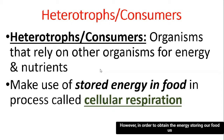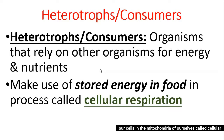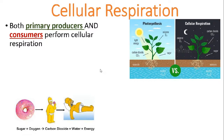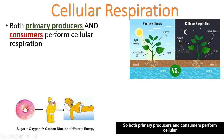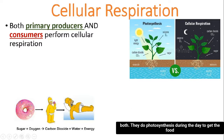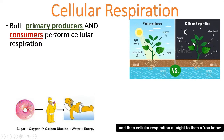In order to obtain the energy stored in our food, us as consumers or heterotrophs must perform a process in our cells — in the mitochondria — called cellular respiration. We use oxygen from the environment to help release and break down that energy so we can use it to live. Importantly, both primary producers and consumers perform cellular respiration. Primary producers do photosynthesis during the day to make food, and cellular respiration at night to break down and release the energy from that food.